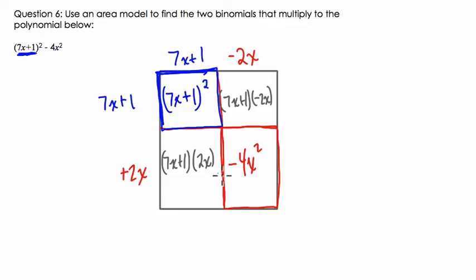Now, I'm not going to compute it because what I notice is that this product is the opposite of this product. And I know that because we're just taking 7x plus 1 and multiplying it by negative 2x. And over here, we're taking 7x plus 1 and multiplying it by positive 2x. So whatever they are, they're opposites. You can work that out if you want to see the details.